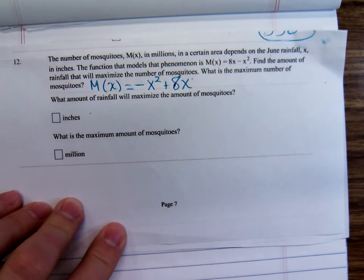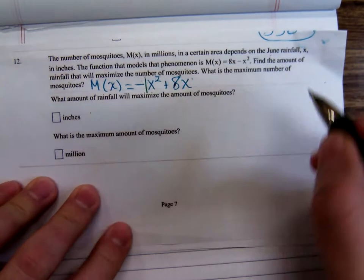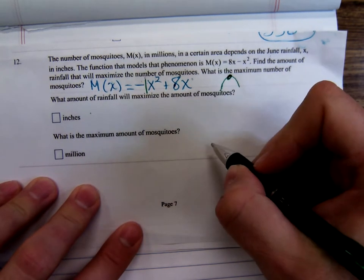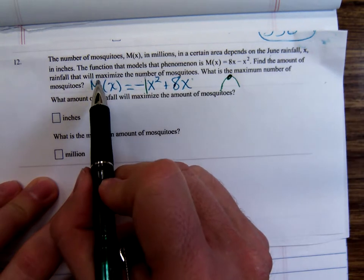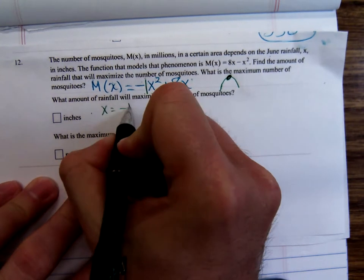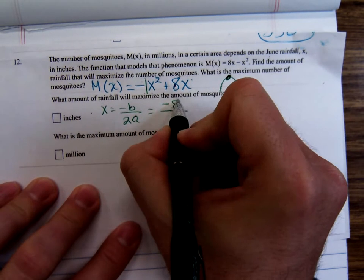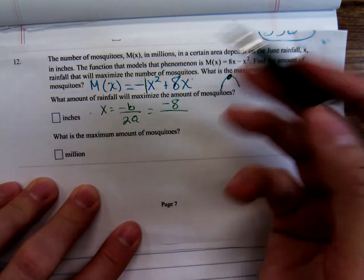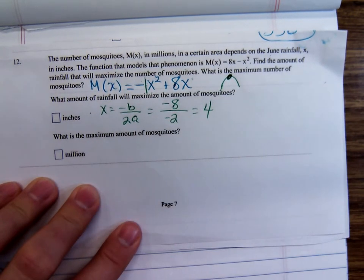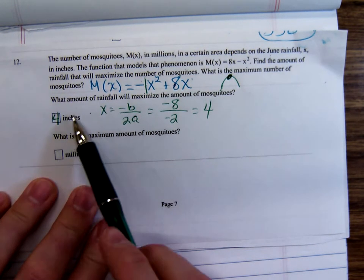How is this parabola opening, up or down? It's opening down, which means the vertex is a maximum. So do the minus b over 2a. So minus 8 over 2 times negative 1. 2 times negative 1 is negative 2. So that's 4. So 4 inches of rain is going to maximize the mosquitoes.